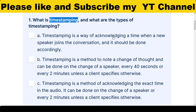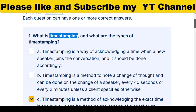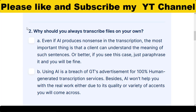The first option — time stamping is a way of acknowledging a time when a new speaker enters a conversation — is somehow partially correct but not perfectly according to the transcription guidelines, so it is not correct. The second option — time stamping is a method to note a change of thought — is also not correct. The third option C — time stamping is a method of acknowledging the exact time in the audio, done on the change of the first speaker and every two minutes — is the correct option.